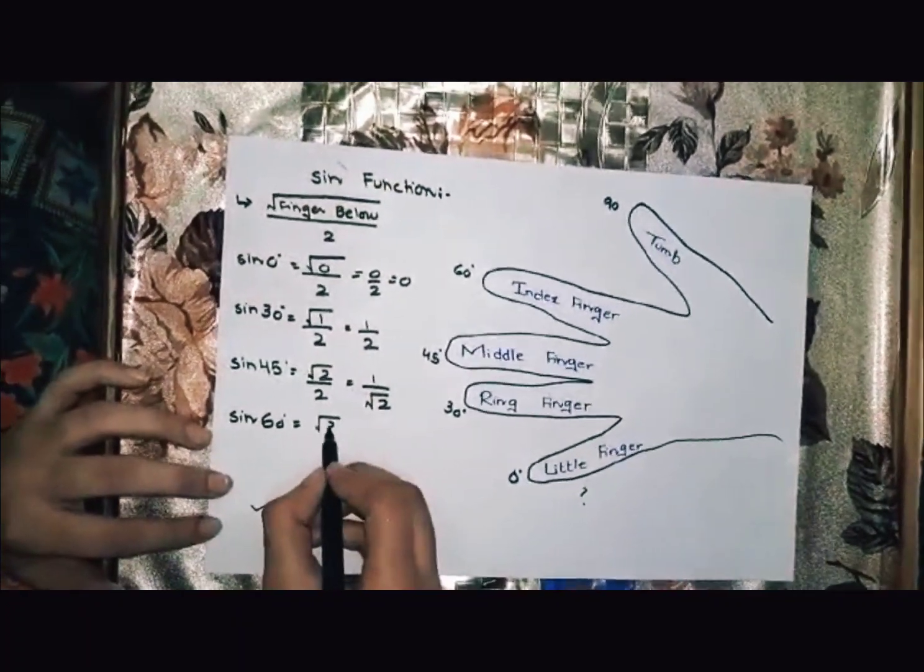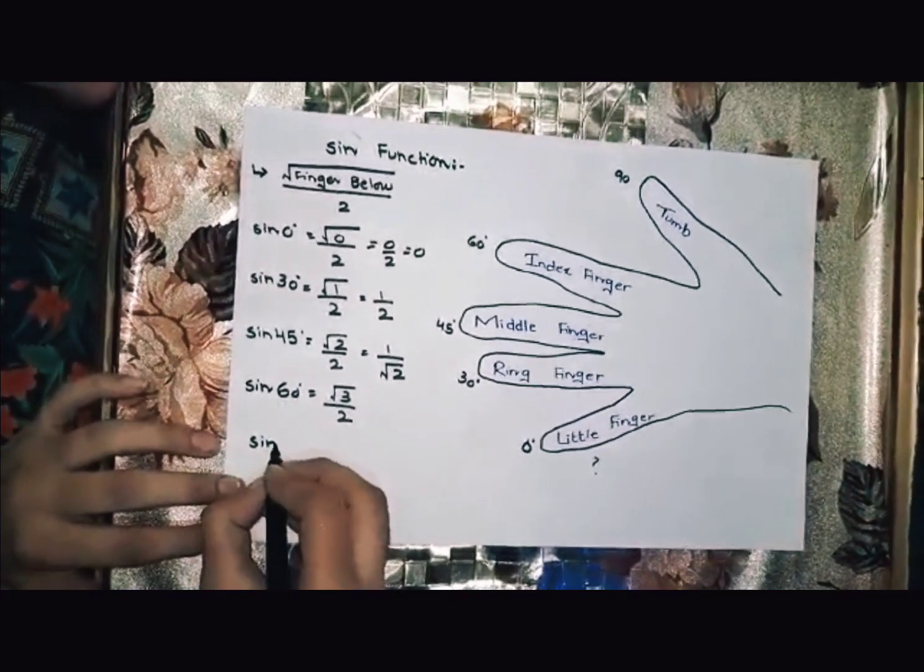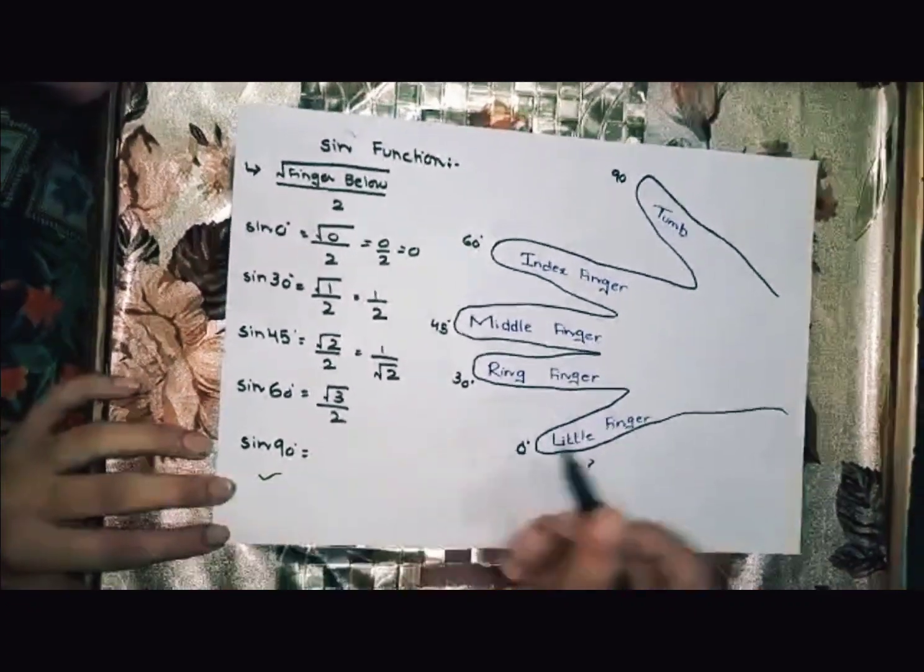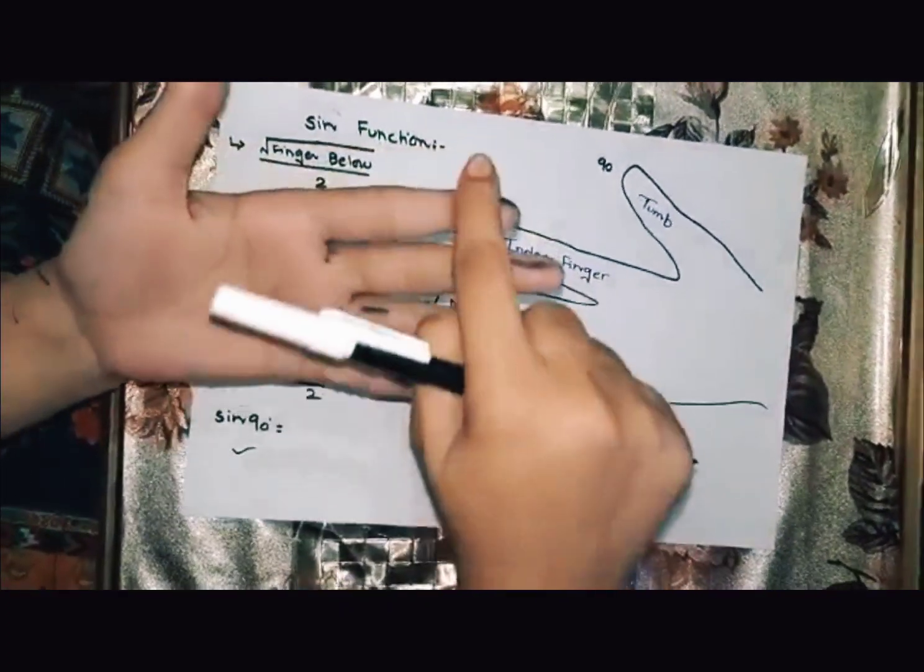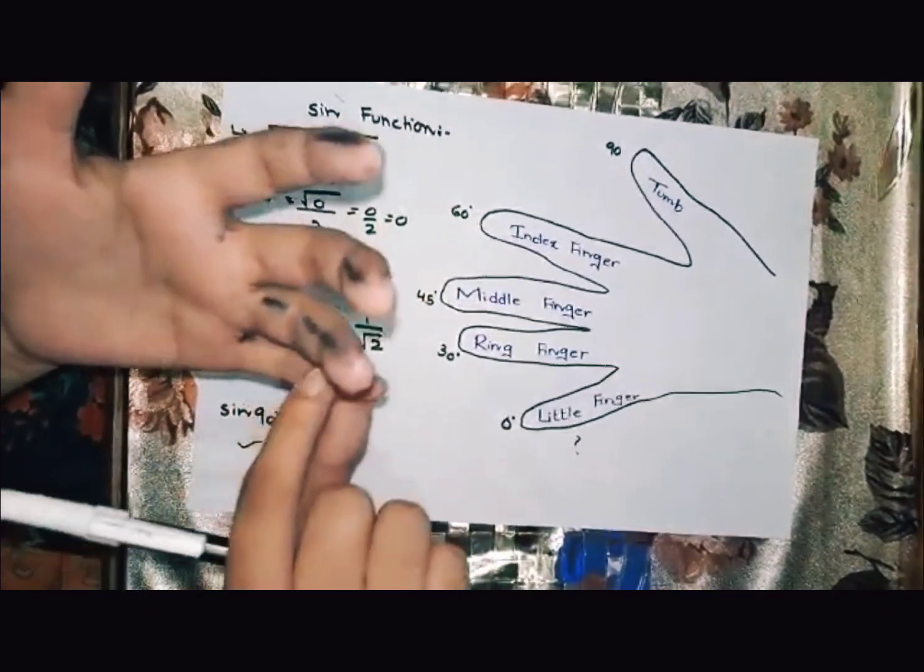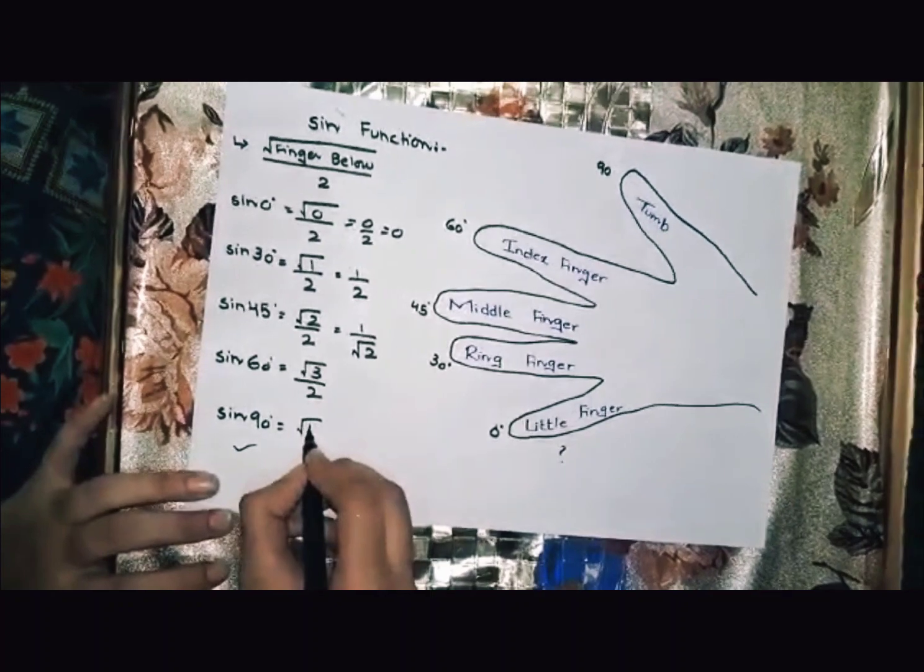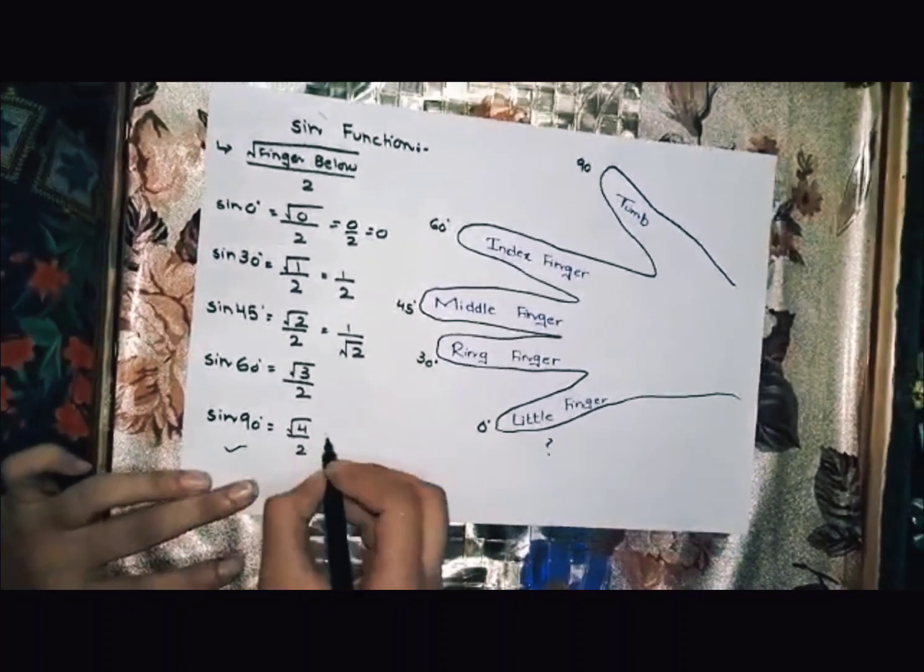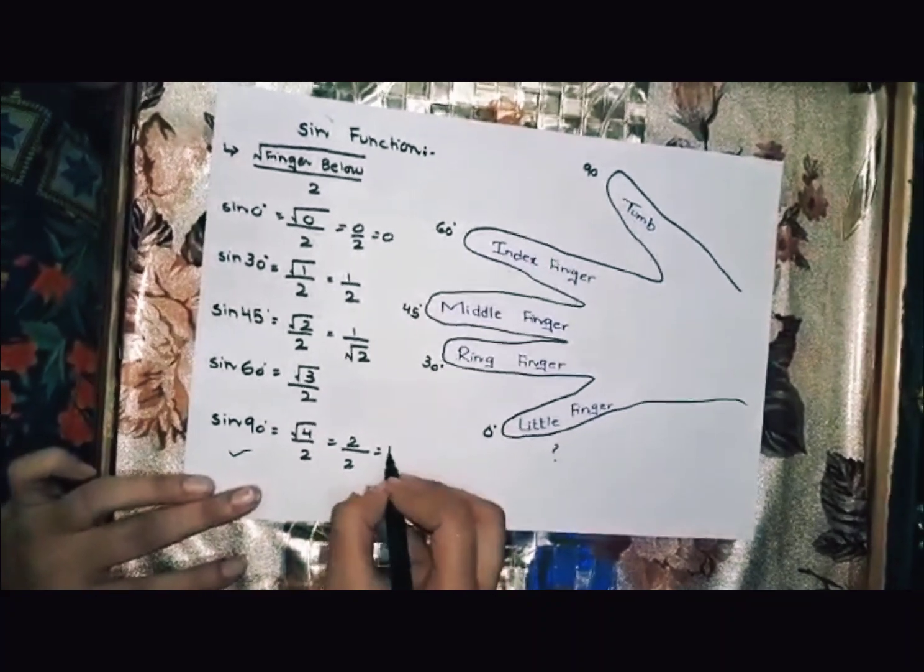Last we have sine 90. Sine 90 is the thumb. We have four fingers below: index finger, middle finger, ring finger, and little finger. Under root 4 divided by 2, which equals 2 divided by 2, equals 1.